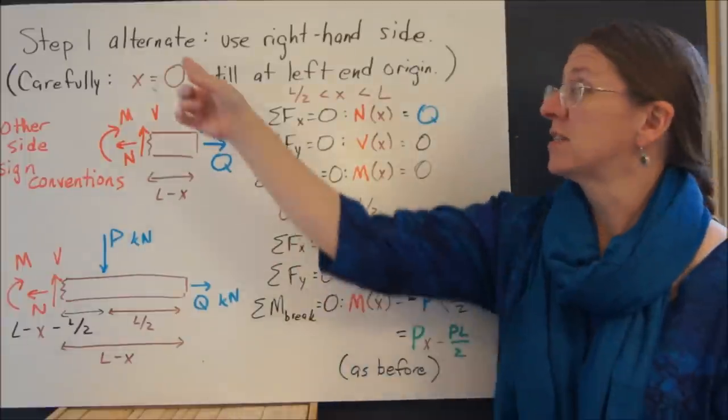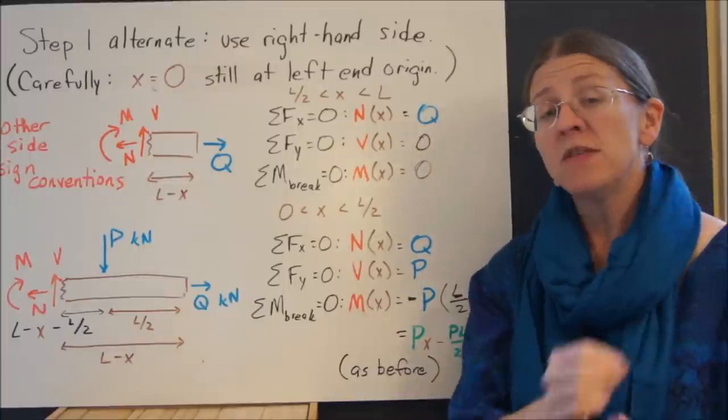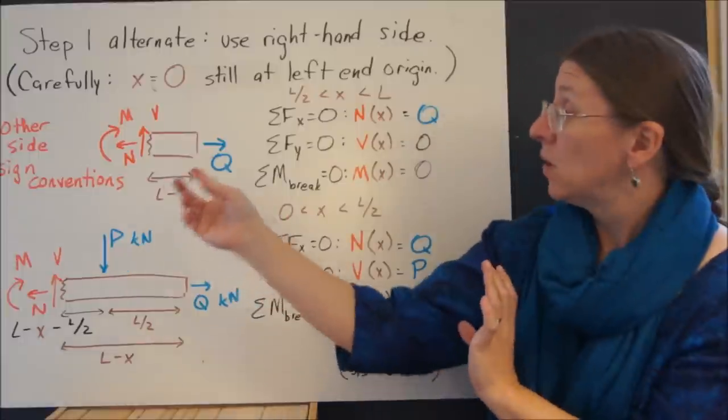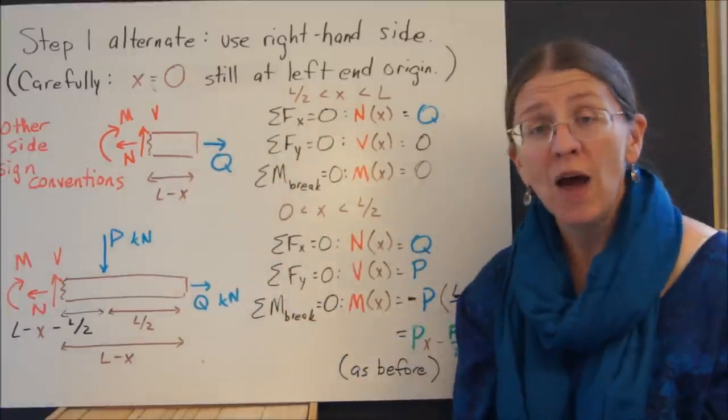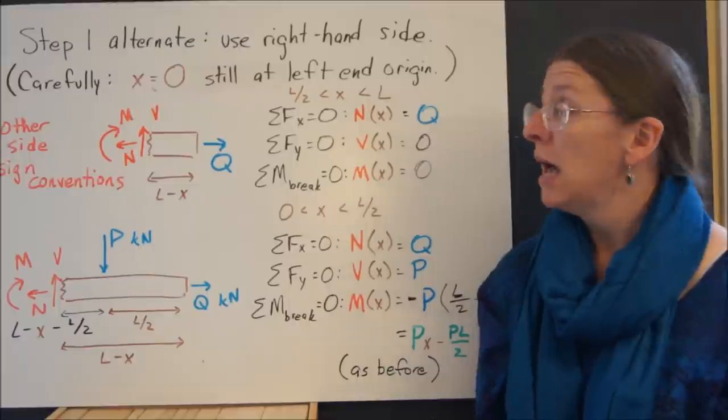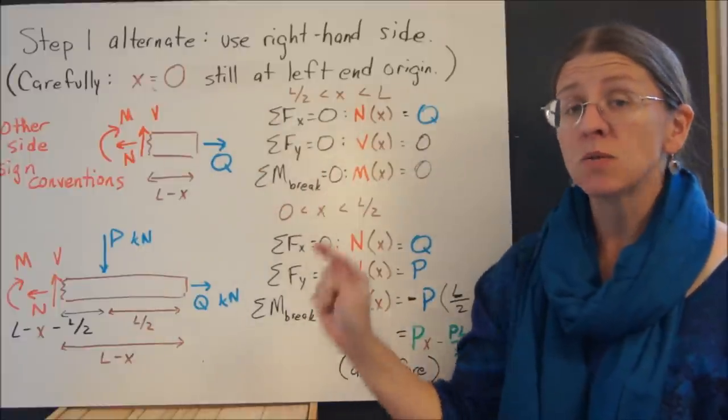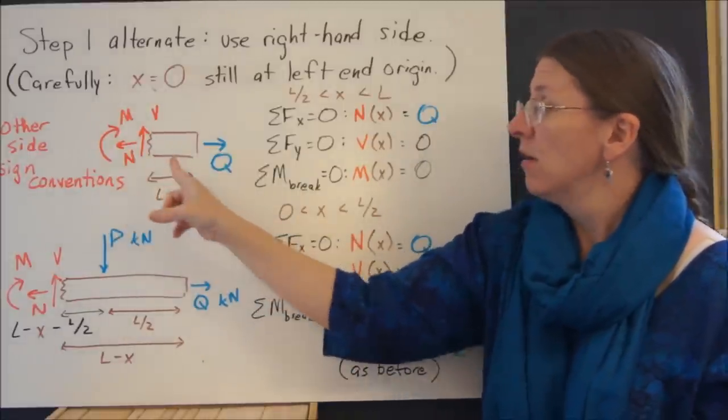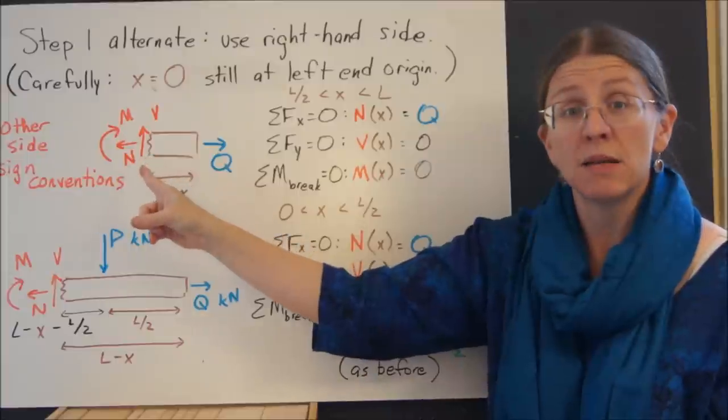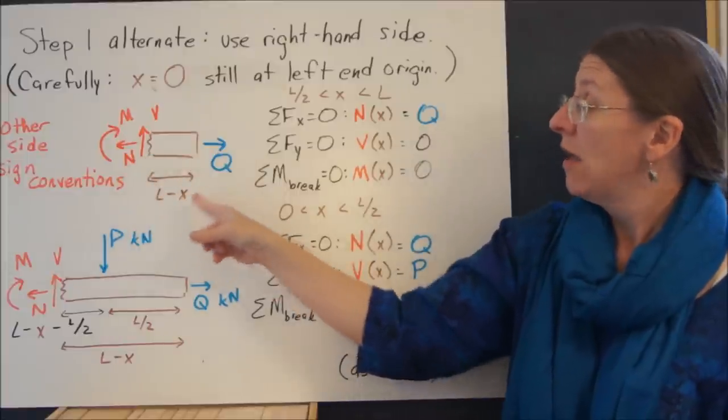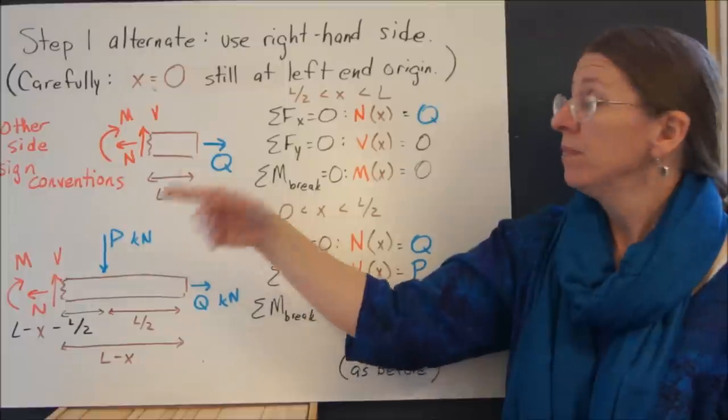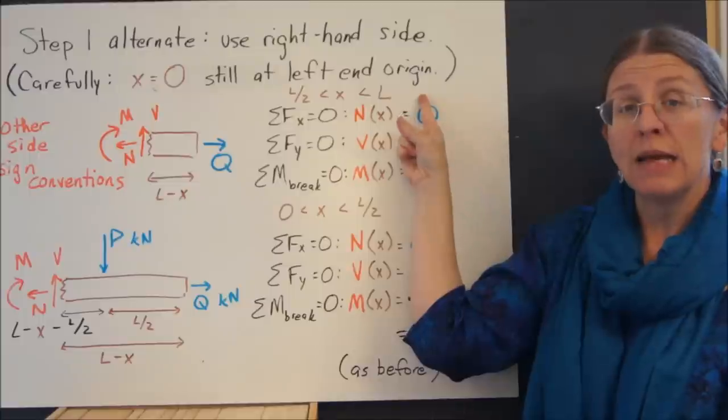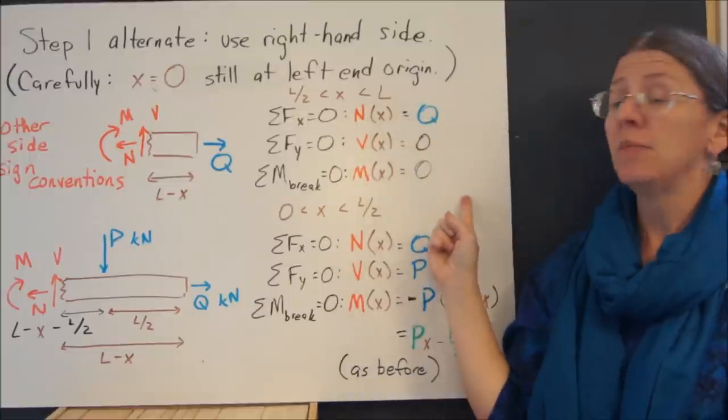There's an alternate step one. Remember that the internal loads are the same whether you take the left-hand portion of the beam or the right-hand portion. In fact, I don't even have to find in this problem what the external loads are. Do be careful though, x equals zero still starts at the wall because it's our coordinate. If I took the right-hand side of the beam, I'm using the right-hand side conventions, then this length is L minus x. This is any x between L over 2 and L.